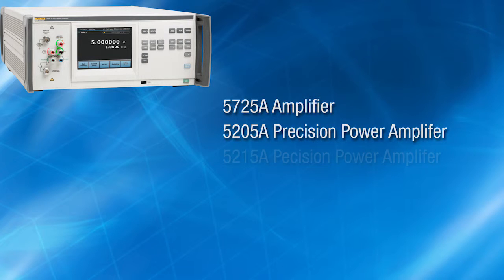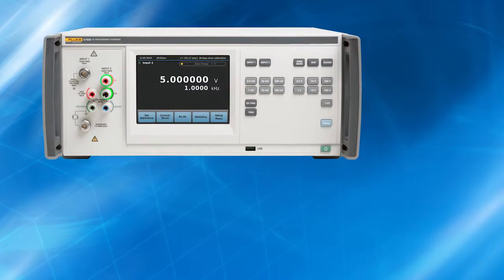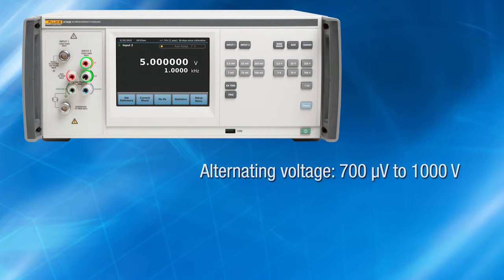The 5205A, the 5215A and transfer standards and AC voltmeters. The 5790B covers an alternating voltage range of 700 microvolts to 1000 volts and a frequency range of 10 hertz to 1 megahertz.